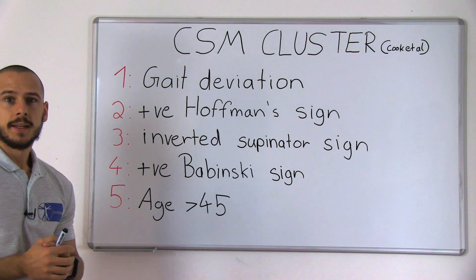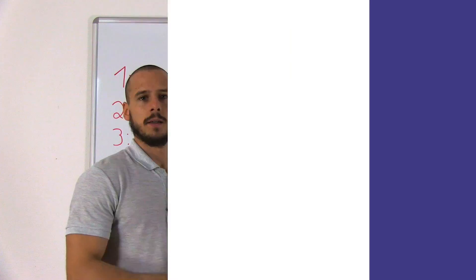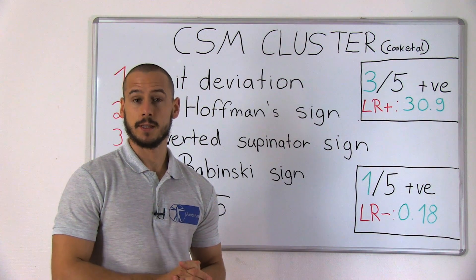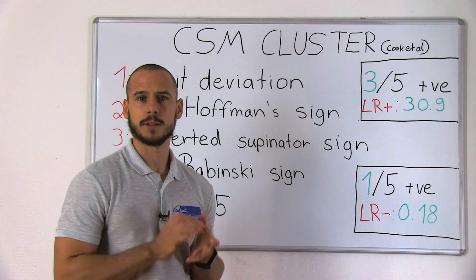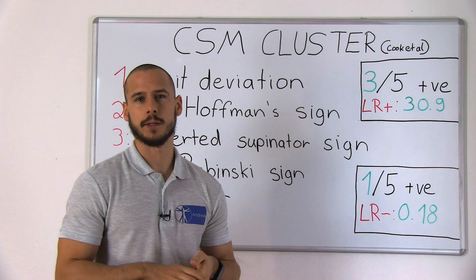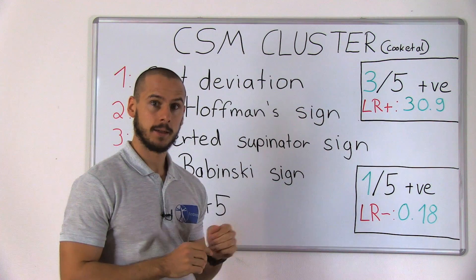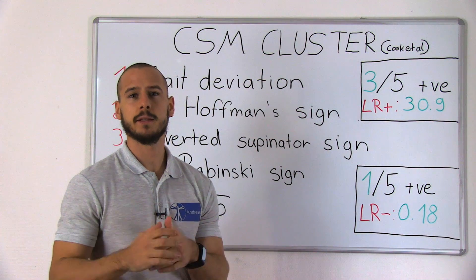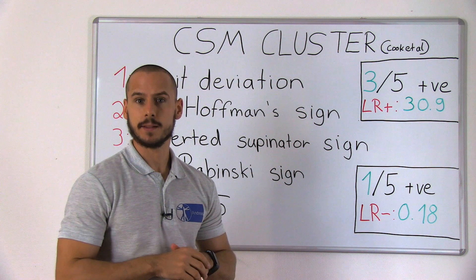The last characteristic is age greater than 45 years. If three out of the five aforementioned characteristics are positive, the positive likelihood ratio for cervical spondylotic myelopathy is 30.9. If only one is positive, the negative likelihood ratio is 0.18.